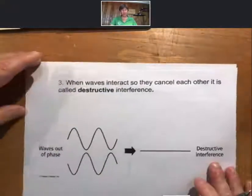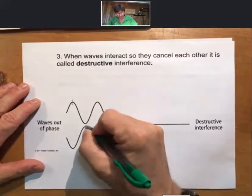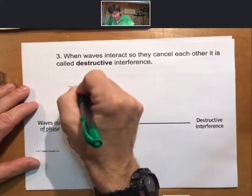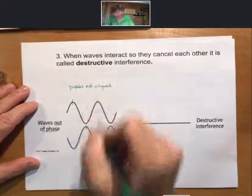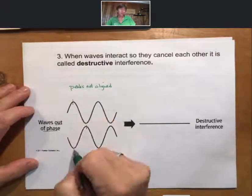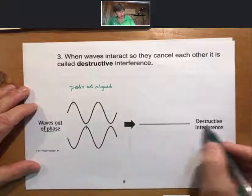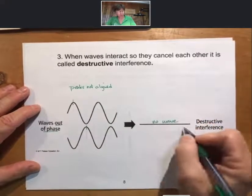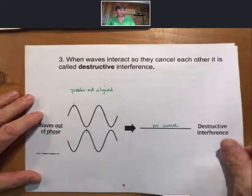On the other hand there is also destructive interference. That's when the waves are out of phase. Another way of saying that is that the peaks are not aligned. In this case the peak and the trough are perfectly aligned and they exactly cancel each other, leading to destructive interference and no wave. This is an attempt to draw no wave. So you can have constructive interference, you can have destructive interference.